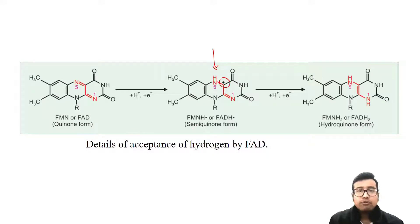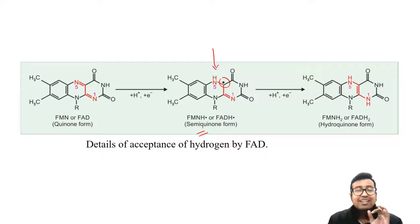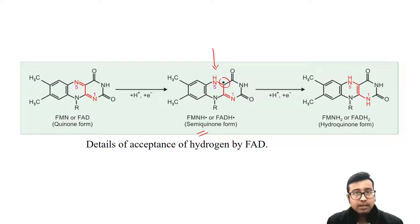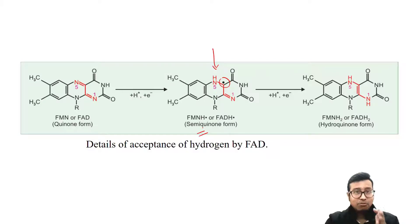Remember, the semiquinone form is important. As a question for you watching: what are other compounds in biochemistry where semiquinone forms are present? One example is ubiquinone in the electron transport chain. It is a homework for you — please comment in the comment section what other semiquinone forms you are aware of.